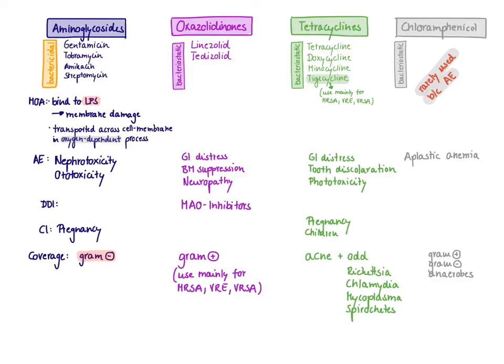The spectrum of activity of tetracyclines is generally very broad. Specific uses include acne — you'll see them in a lot of acne treatments — and against atypical bacteria that don't typically show up on a gram stain, such as Rickettsia, Chlamydia, Mycoplasma, and spirochetes. All these bacteria lack a typical cell wall, which makes tetracyclines a logical choice since our number-one antibiotics, the cell wall synthesis inhibitors, are ineffective against them. For example, Mycoplasma does not even have a cell wall, and the others have a very thin cell wall or live intracellularly.